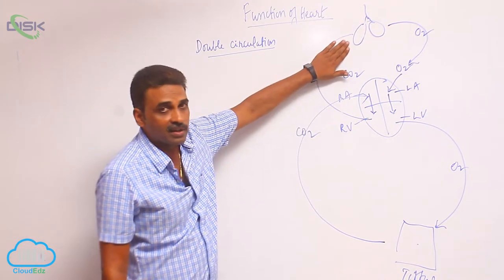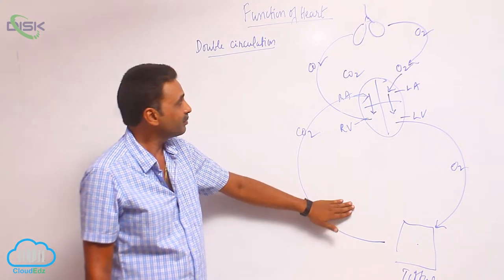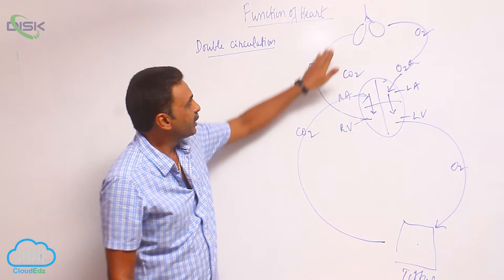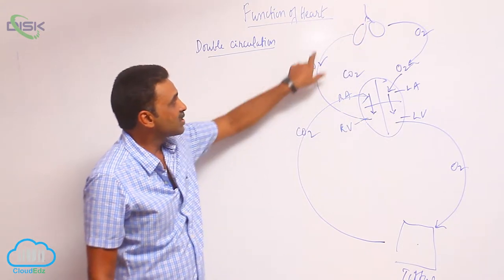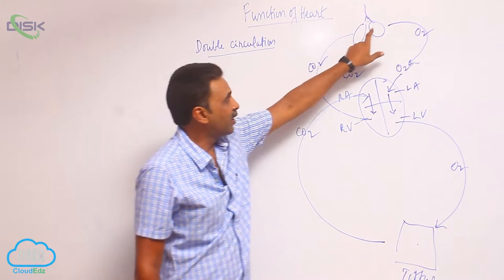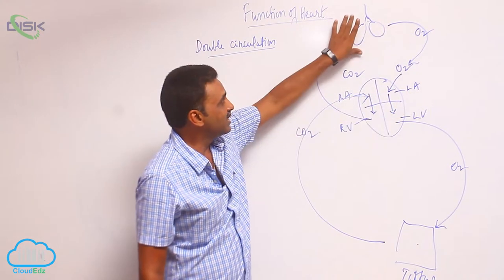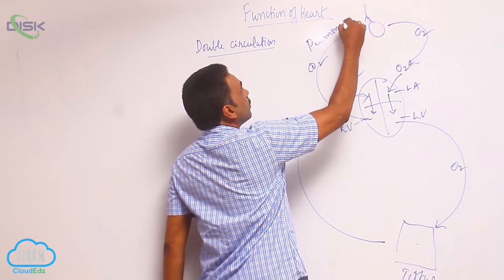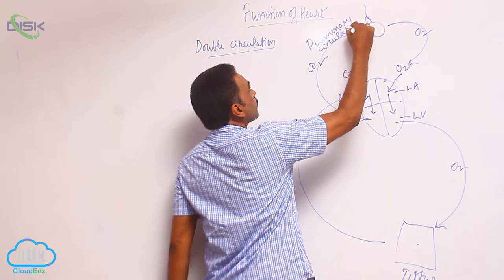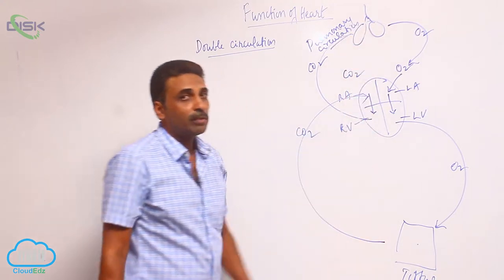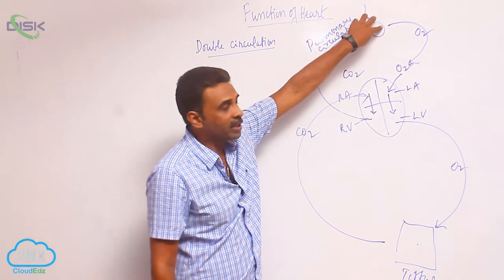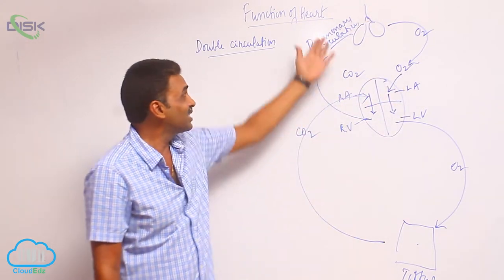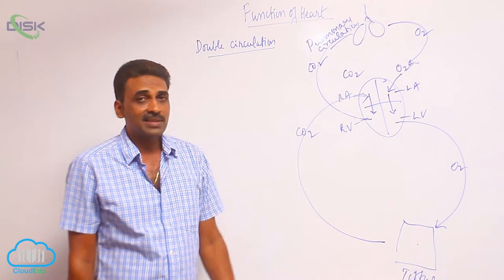This is the lesser circulation and this is the greater circulation. In the lesser circulation, the deoxygenated blood is coming to the lungs and oxygenated blood is coming to the heart. This is called pulmonary circulation. Pulmonary means lungs — the circulation involving the lungs, blood coming to lungs and blood going away from lungs. It is called lesser circulation.